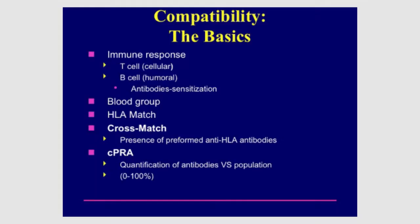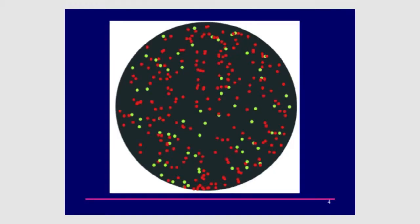The cross-match is the real test of whether you match a specific donor. It is a technique to determine if you already have antibodies against that donor. We take your serum collected every month, put it in contact with cells from the donor, add the proper ingredients, and if your antibodies are able to destroy the donor's lymphocytes, they will do the same to the kidney.